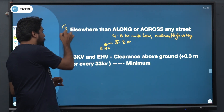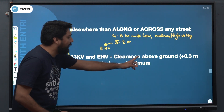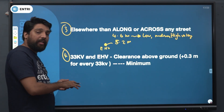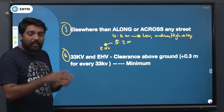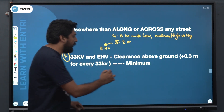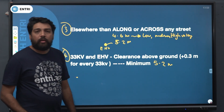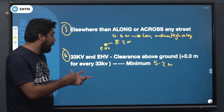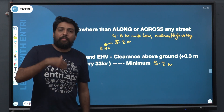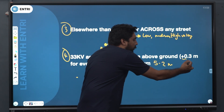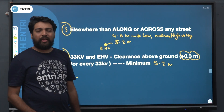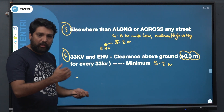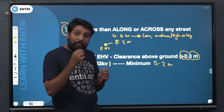That is the third point. Clearance above the ground: if you are having 33 kV and extra high voltage line, 33 kV at the top of the line, the minimum clearance distance is 5.2 meters. For every 33 kV extra high voltage, clearance above the ground starts at 5.2 meters and increases by increments — for example adding 0.3 meters per step.